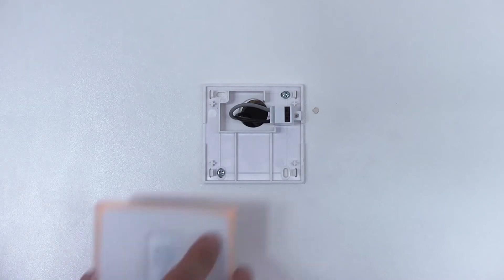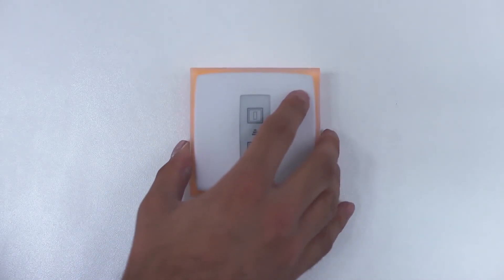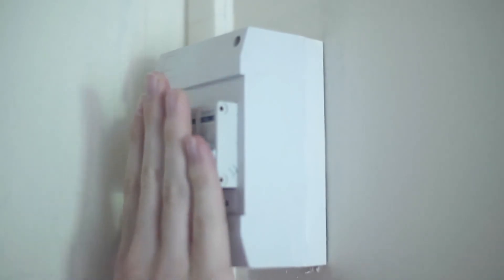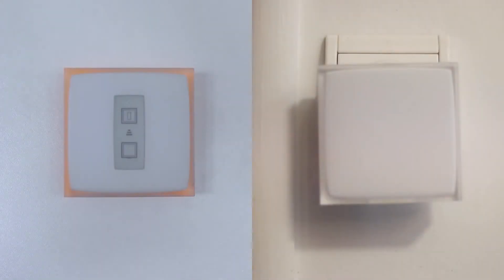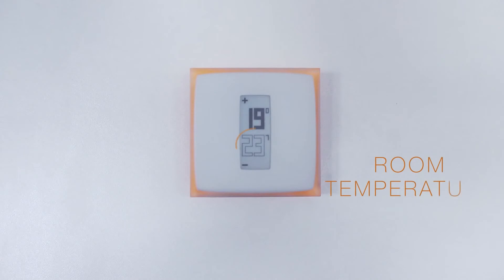Install the thermostat on the mounting plate. Turn on the power. The thermostat will look for the relay. Once the thermostat finds the relay, the room temperature and the set point temperature will appear on the screen.